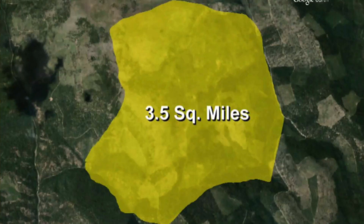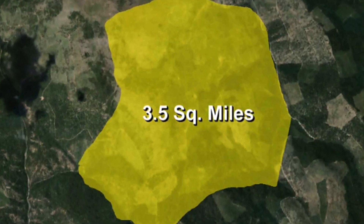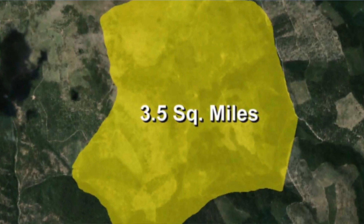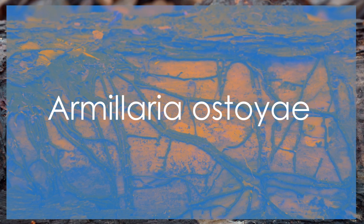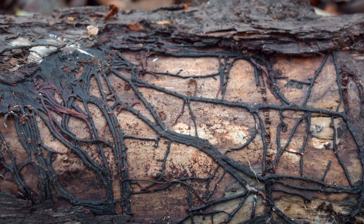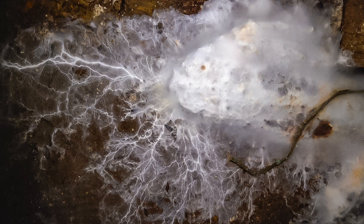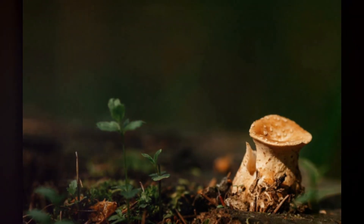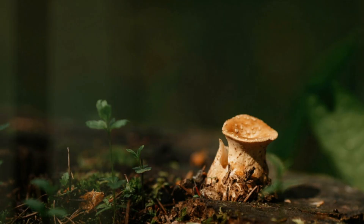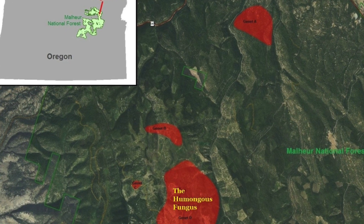Among the many fascinating aspects of fungi is the existence of the world's largest organism, which might surprise those unfamiliar with fungal biology. The title belongs to a particular fungus, also known as the honey fungus. This colossal organism resides in the Malheur National Forest in eastern Oregon, USA, and is a species of pathogenic fungus known for causing root rot in forests, leading to the decline and death of trees. Its claim to fame is its astounding size and age. The fungus primarily grows underground, spreading through a vast network of mycelium. The mycelium in the Malheur National Forest covers an estimated 2,385 acres — that's 965 hectares — and is believed to be over 2,400 years old.